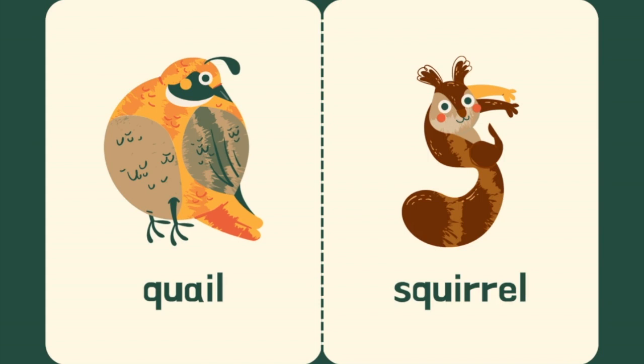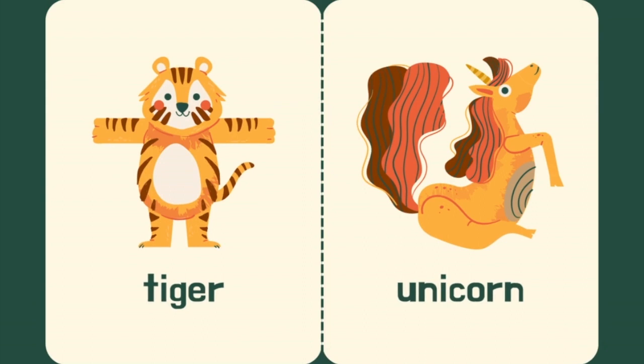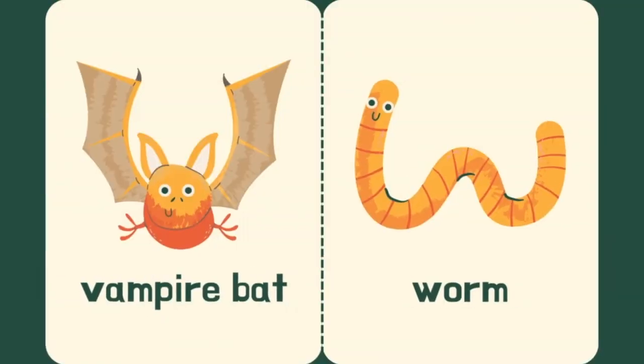S is for Squirrel. T is for Tiger. U is for Unicorn. V is for Vampire Bat. W is for War.